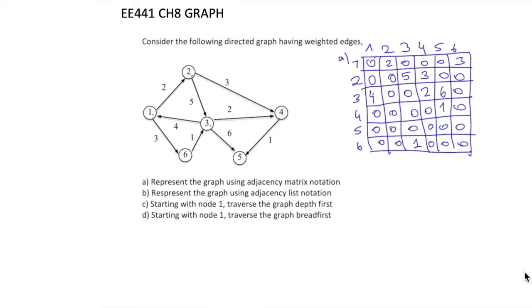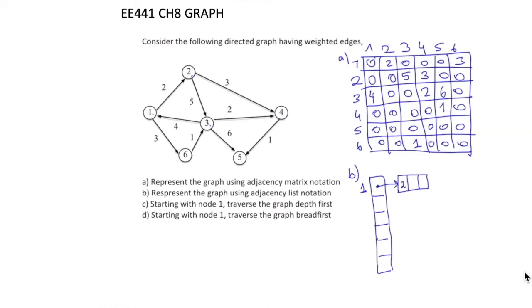So this is the adjacency matrix. Now let's consider the adjacency list notation. First, we have an array having 6 entries, and each one is a header to a linked list. This is the entry in the array corresponding to node 1, and here we have a pointer. It will point to node 2, with weight value 2, and it is connected to another entry.